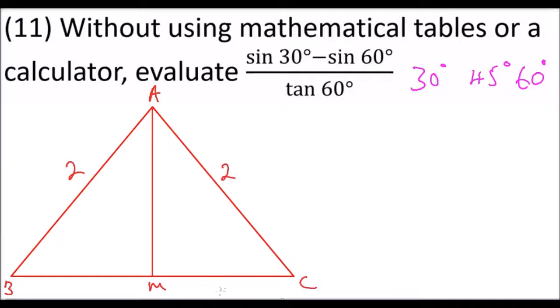And therefore when M is the midpoint of BC, that side is 1 and this side is 1. This angle here is 90 degrees, meaning that we can use the Pythagorean theorem.